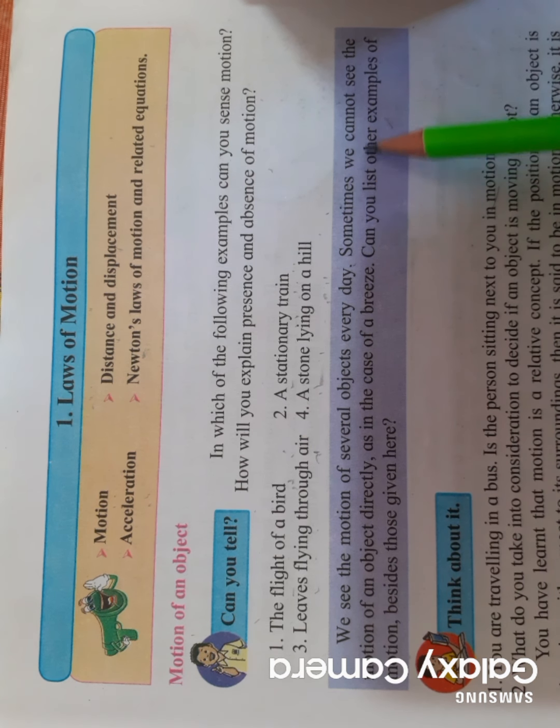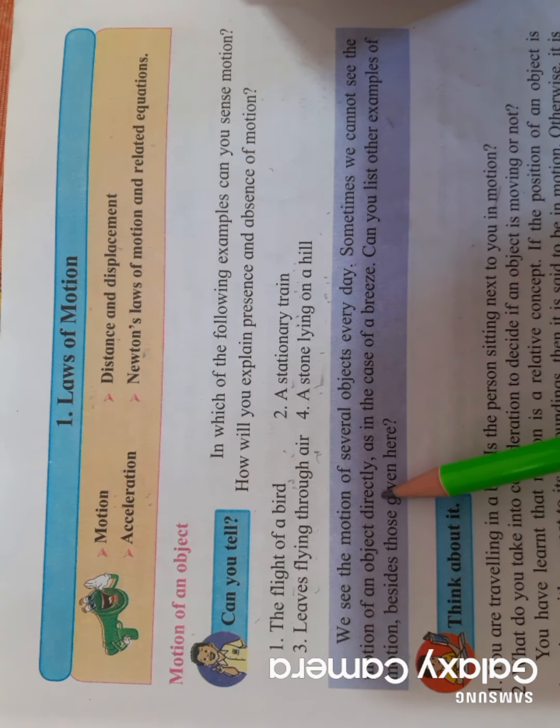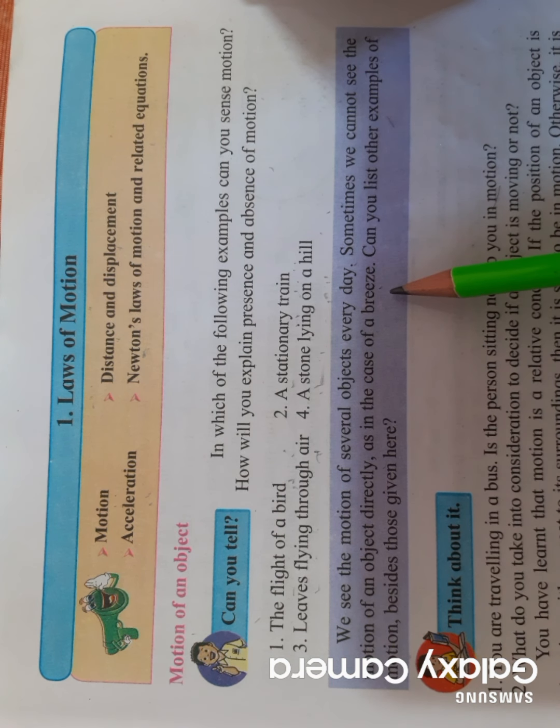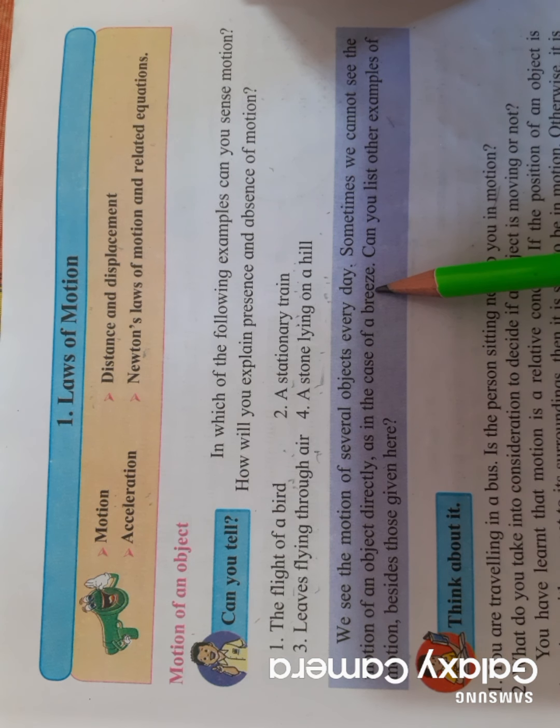Sometimes we cannot see the motion of an object directly, as in the case of breeze. Suppose you are standing in a room and suddenly cold air comes and touches your body. Are you able to see the breeze? No, but that air is in motion, and that's why you are able to feel it.